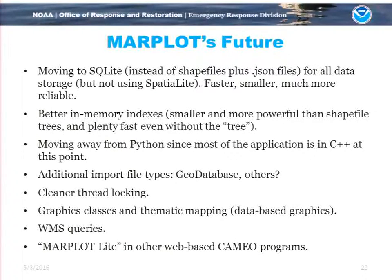Looking to the future: moving more to SQLite, since many users don't have huge amounts of data so we can keep in-memory indexes and draw very quickly. Moving away from Python as I mentioned. Possibly importing additional file types. Moving to more flexible thematic mapping — right now users can color objects manually, but we're adding the ability to color by data value. And making the program work with some of the other web-based Cameo programs.